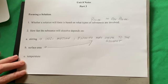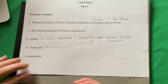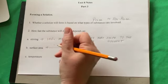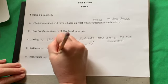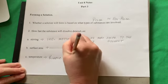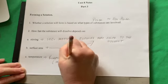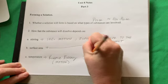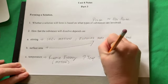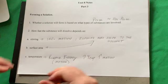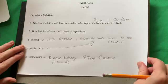Temperature also matters. The warmer something is, the more likely a solid is going to dissolve. Temperature is a measure of kinetic energy — the energy of motion. If we increase the temperature, we increase the motion, and therefore we get a faster-forming solution.